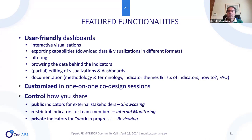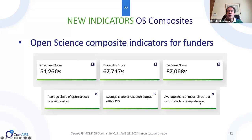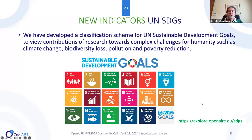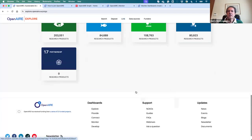There are different visibility controls: some indicators or sections, or the entire monitor, can be public for showcasing; some can be restricted to team members for internal monitoring; and some can be private for work in progress. New indicators introduced include composite scores for openness, findability, and fairness, aiming to offer a broader view of research accessibility and management practices. Openness is defined as average share of open access research output; findability as average share of research output with a PID; fairness as average share of research output metadata completeness.